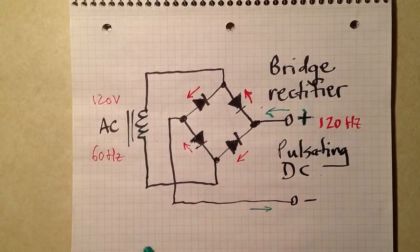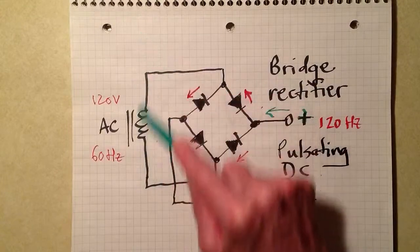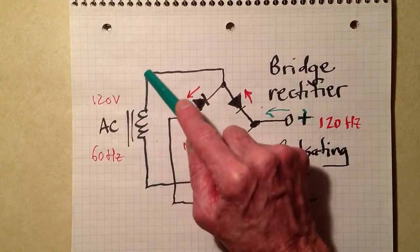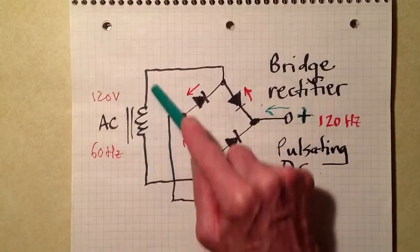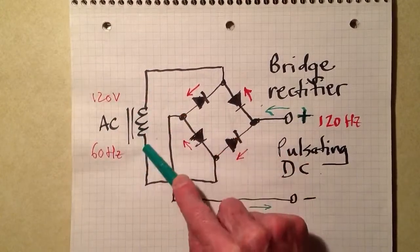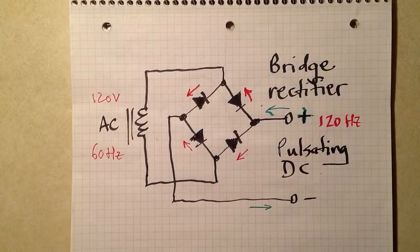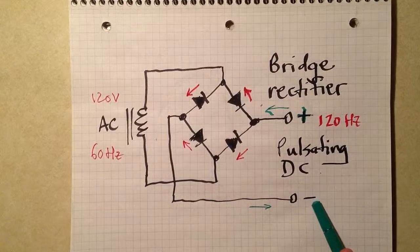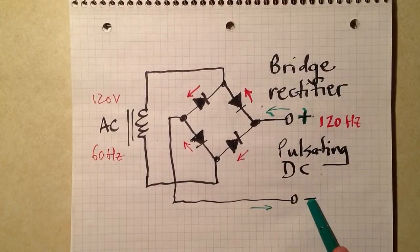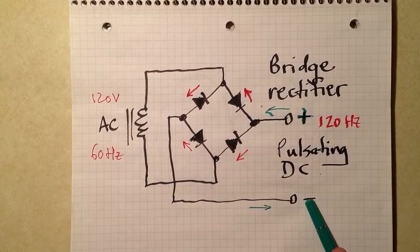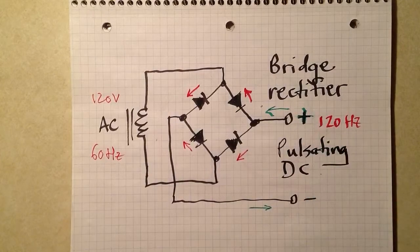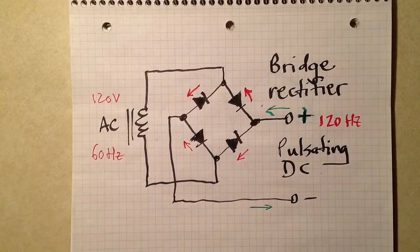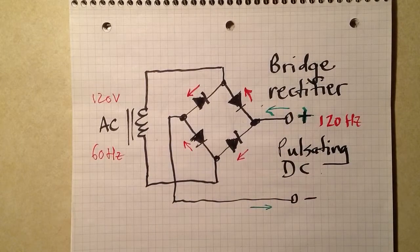This is the transformer secondary. Electrons flow back and forth like this. One complete cycle takes a 60th of a second. That's like this. One half of a cycle takes one 120th of a second. We get a pulse of negative polarity here every, well, 120 times a second. And we get a pulse of positive polarity there that coincides with the pulses of negative polarity here.